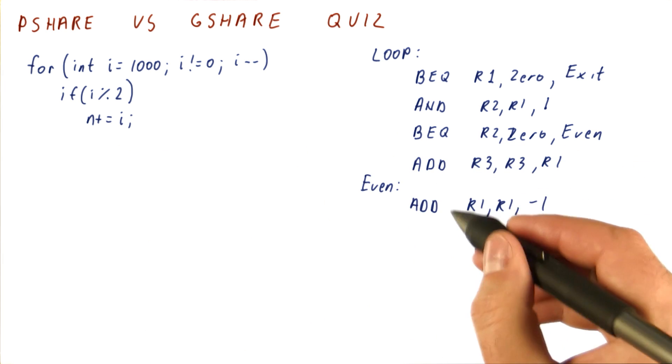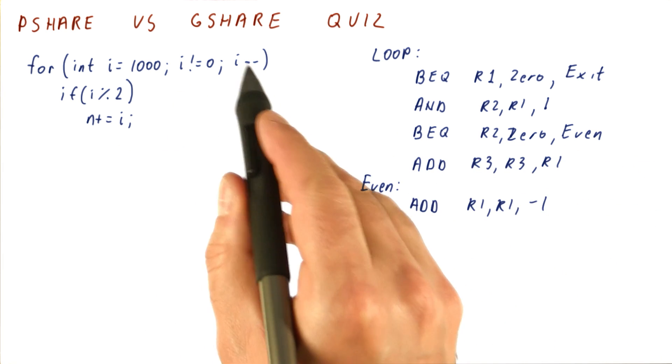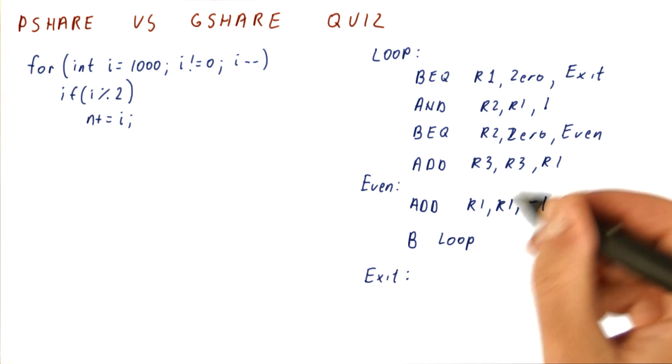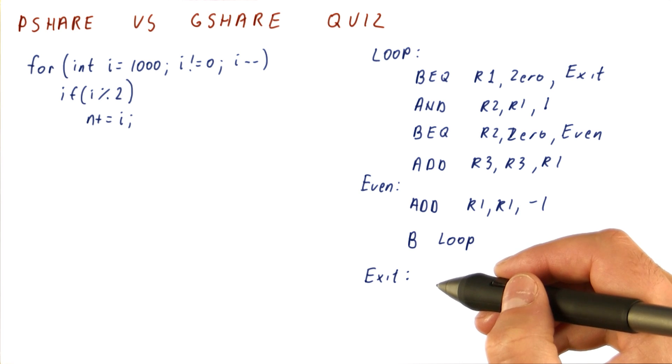Either way, we decrement the r1. This is the i minus minus. And we unconditionally branch back to the loop. And the exit label for exiting the loop is here.